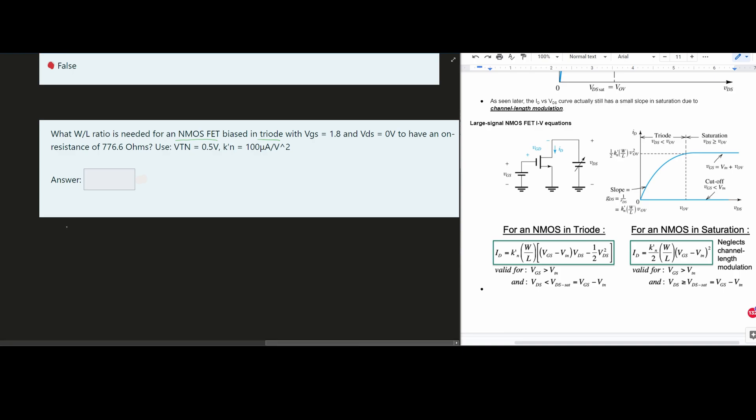So our equation here is going to be I_D equals K' N times W over L times (VGS minus VTN) times VDS minus one half VDS squared. This is going to become very important in a second.